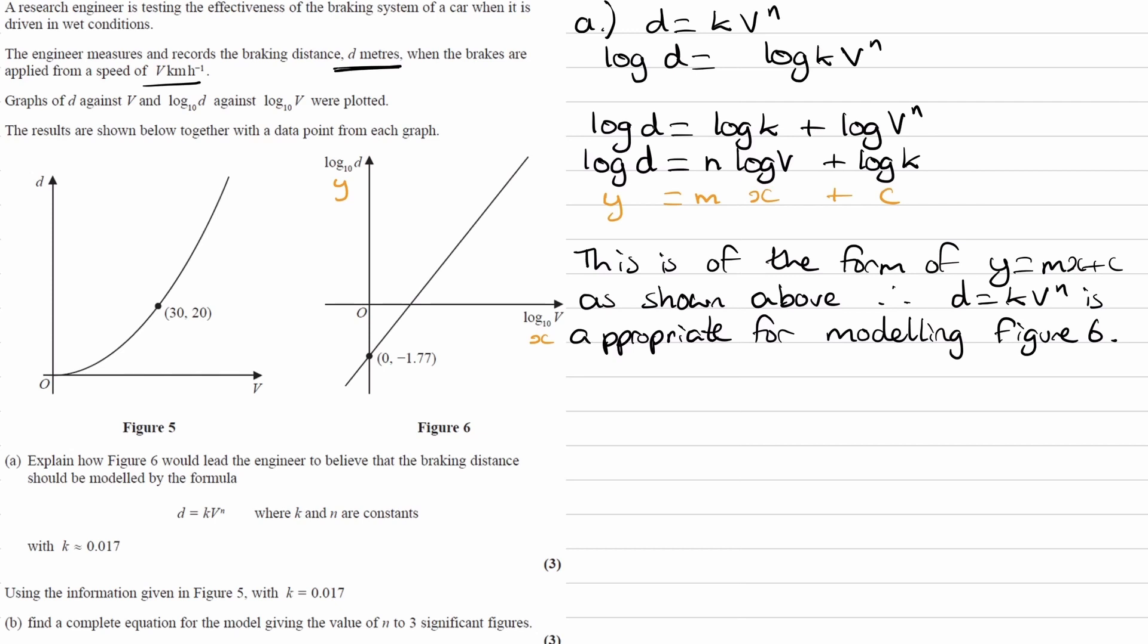So if we put it into that equation, we end up with log v equals 0, log d equals minus 1.77, so 0 times n plus log k, which is the y-intercept. So we could have just straight away set log k equal to minus 1.77, and then we end up with k equals 10 to the power of minus 1.77. If we type that into our calculator, we end up with 0.01698, so k is roughly equal to 0.017 to two sig figs.